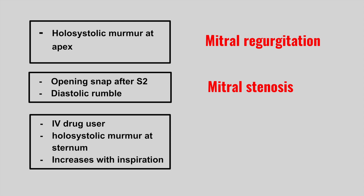An IV drug user with a holosystolic murmur at the sternum that increases with inspiration — this is tricuspid regurgitation. IV drug users are at increased risk of Staph aureus endocarditis, which affects the tricuspid valve.